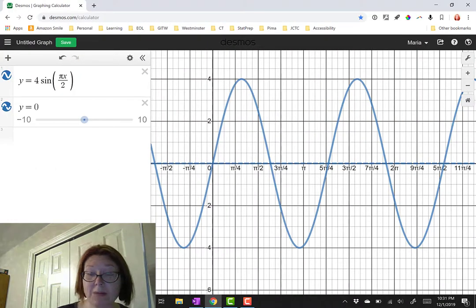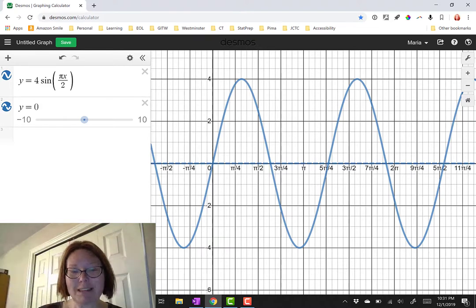So let's write that down as a property. All right, well what else can we say? From the midline to the maximum or the midline to the minimum is a distance of 4.